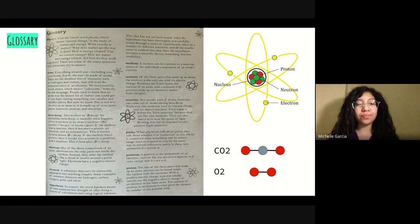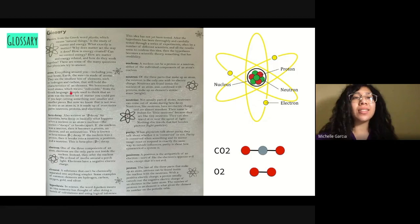Now element. A substance that can't be chemically separated into anything simpler. Some examples of common elements are hydrogen, carbon, oxygen, gold, and silver. Hmm, cannot be separated into anything simpler. Where did we talk about something similar earlier? Ah, atom. Now it's time to be careful. An element is not exactly the same thing as an atom. Elements are made up of atoms, and each type of element is made up of a specific type of atom. So let me show you the difference right here.